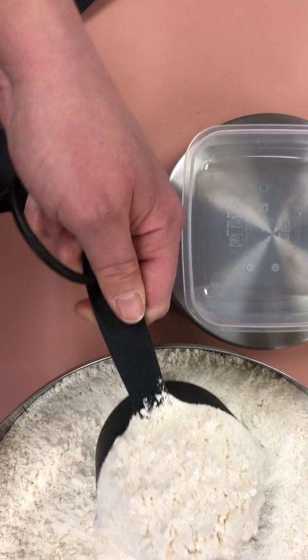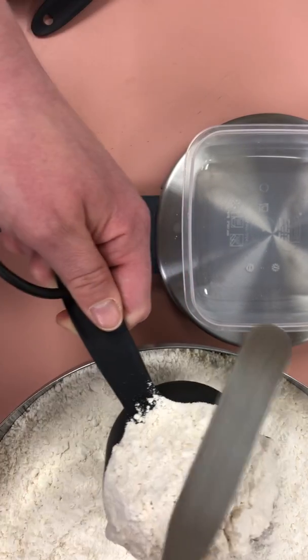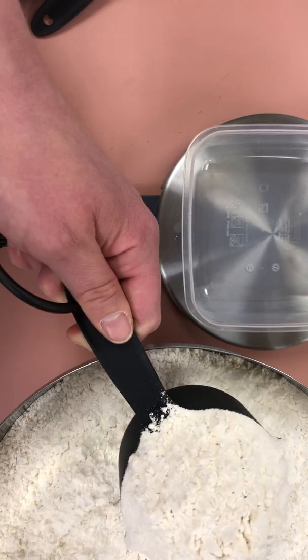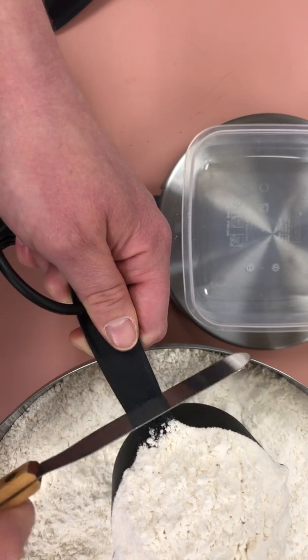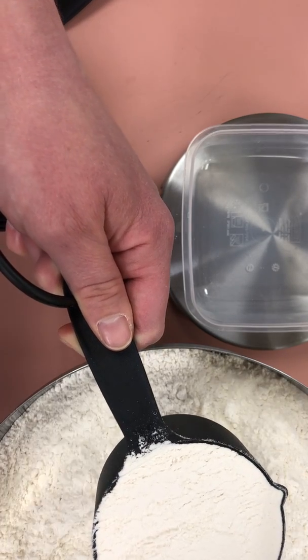Notice I have a very mounded heap. I am going to take my frosting spatula and scrape across the top of the measuring cup to make sure there is a level amount.